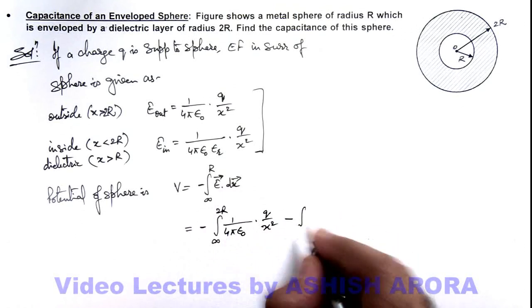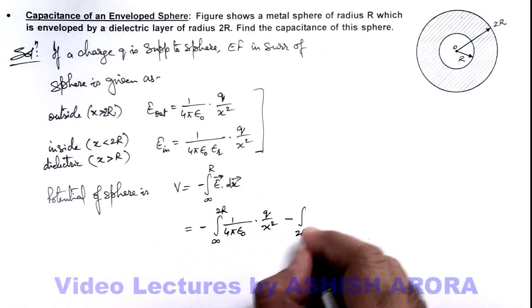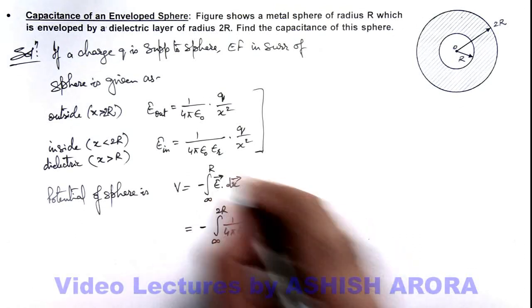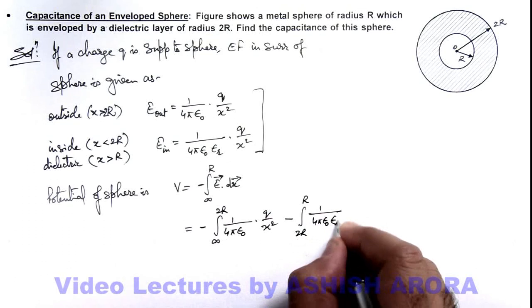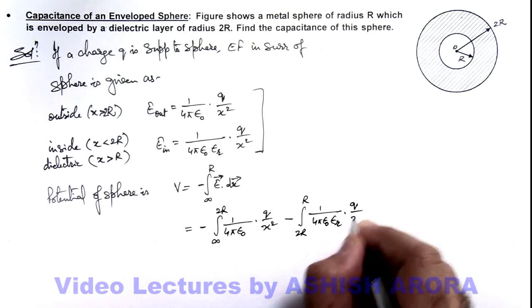Minus further we bring it from 2R to R, inside electric field which is 1 by 4π epsilon not epsilon R, multiplied by Q by x square.